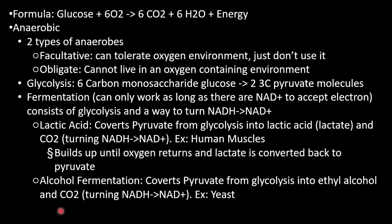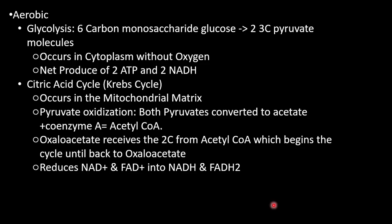Alcoholic fermentation converts pyruvate from glycolysis into ethyl alcohol and carbon dioxide, turning NADH into NAD+. An example is yeast. In aerobic cellular respiration, glycolysis occurs in the cytoplasm without oxygen, producing two ATP and two NADH.